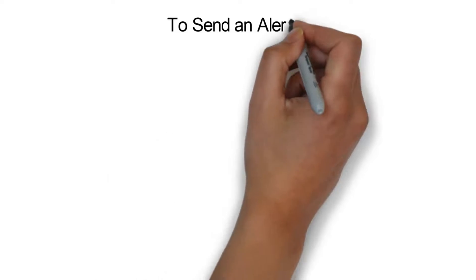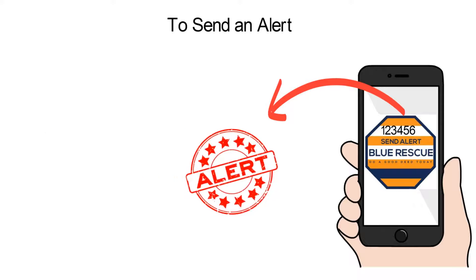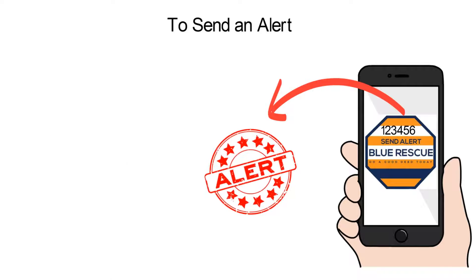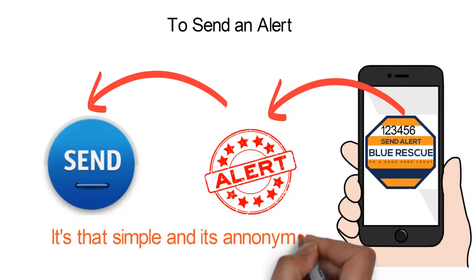To send an alert, simply enter the vehicle owner's user ID into the app, select a predefined alert, for example, car lights are left on, and send. It's that simple and it's anonymous.